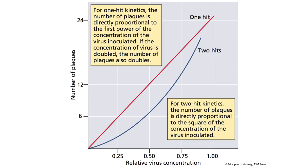For most viruses, one virus particle is enough to make a plaque. For some viruses, you need two — this is because the genome is split between two particles rather than contained in one. A lot of plant viruses are like that: you need two viruses to infect a cell. It's an evolutionarily sustainable approach because it persists in nature.